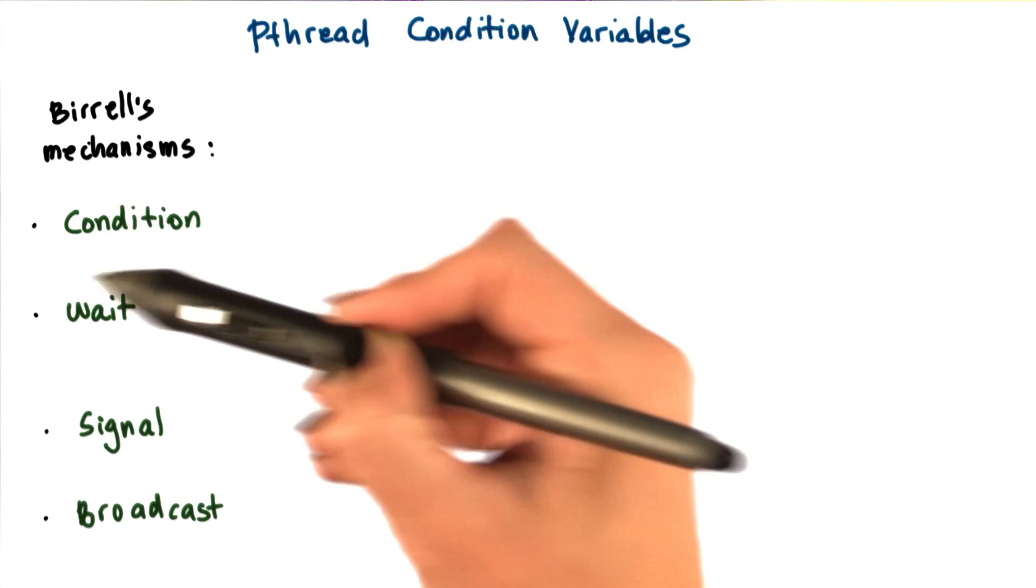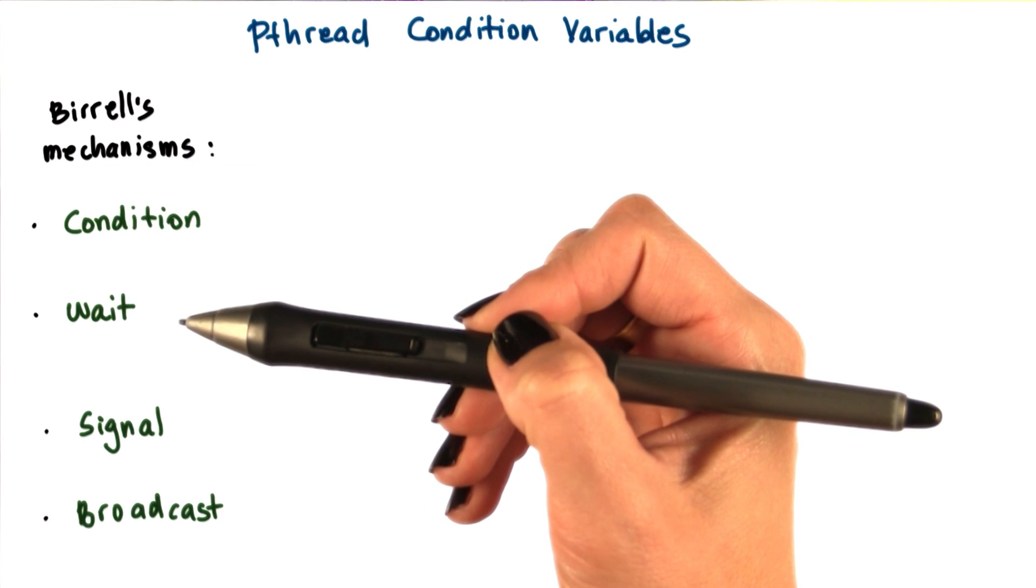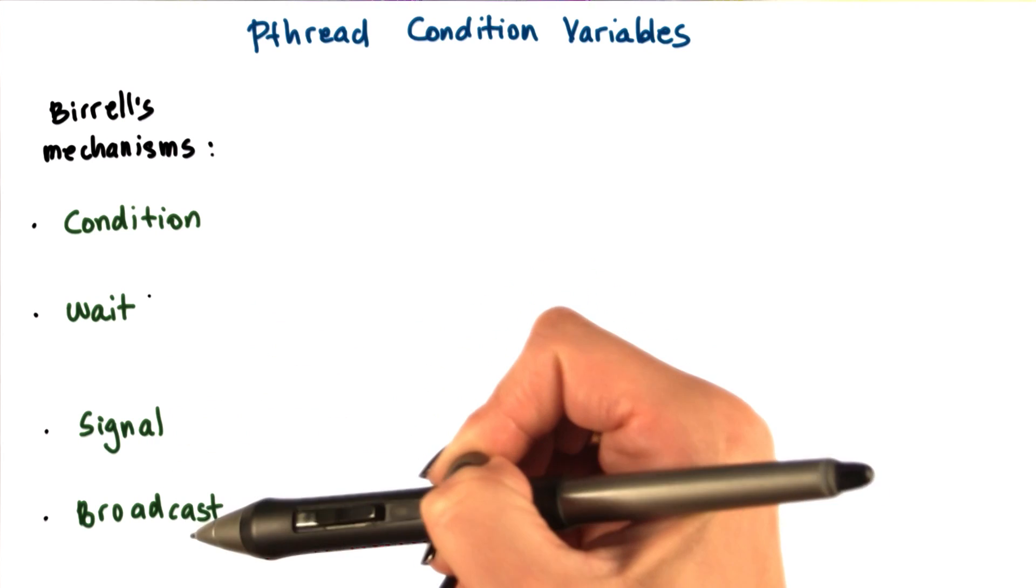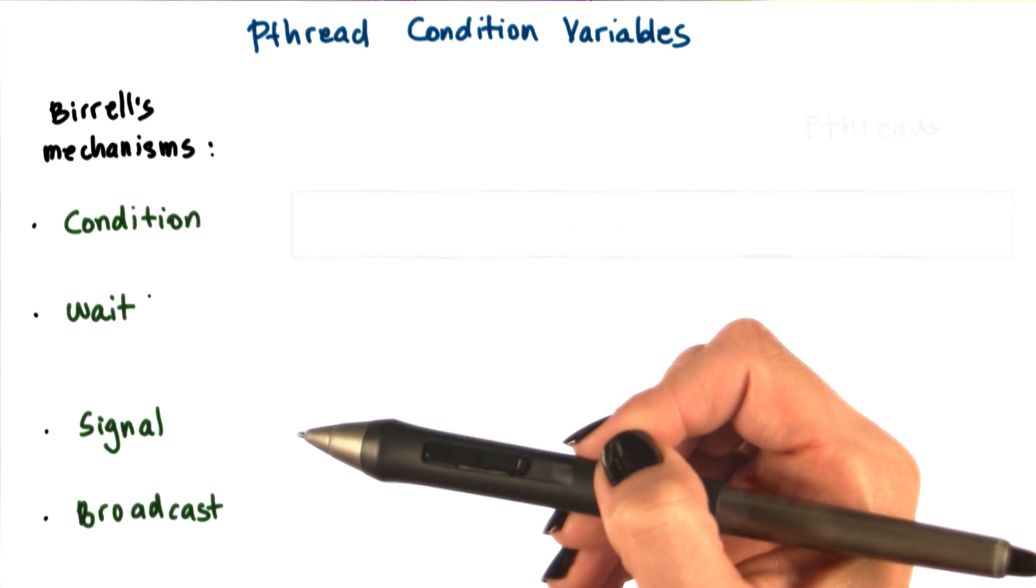Beryl proposed the condition variable abstraction, as well as three operations: wait, signal, and broadcast that can be performed on condition variables.